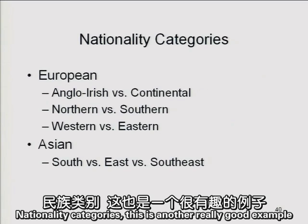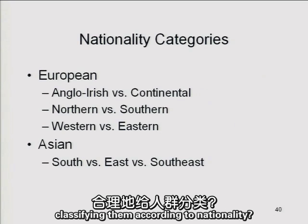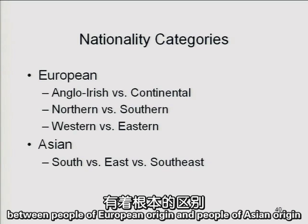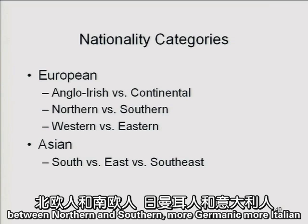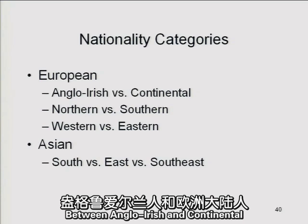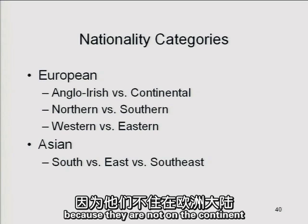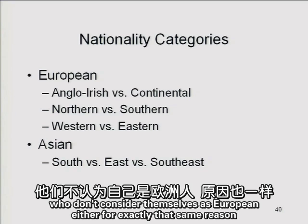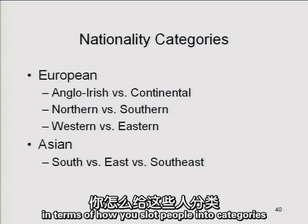Nationality categories are another good example. How would we divide people up by nationality? Very often you find a fundamental distinction between people of European origin and people of Asian origin, but then we make distinctions between Western and Eastern Europeans, Northern and Southern, more Germanic, more Italian, between Anglo-Irish and Continental. The Anglo-Irish sometimes don't even consider themselves European because they're not on the continent, and there are certain Europeans, like the French, who don't consider them European either. Point of view makes a big difference in how you slot people into categories.